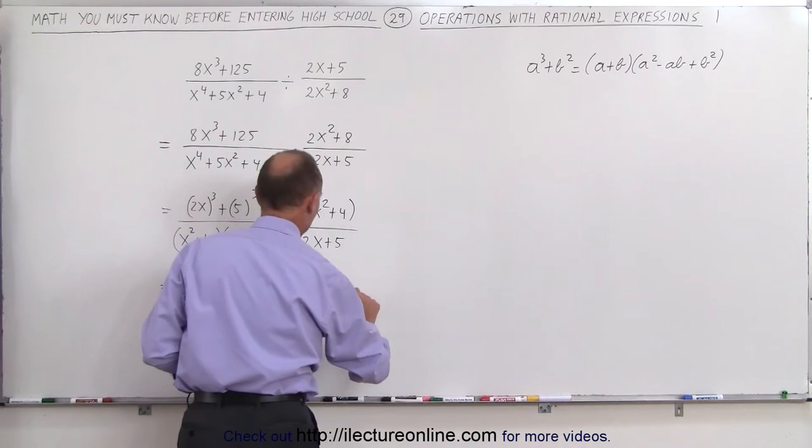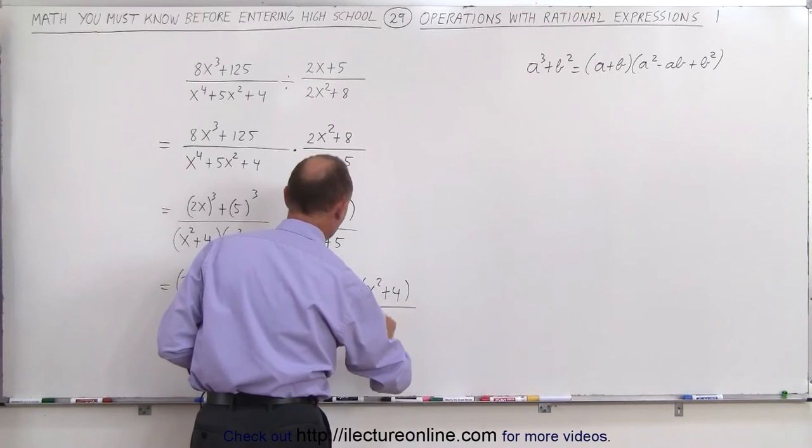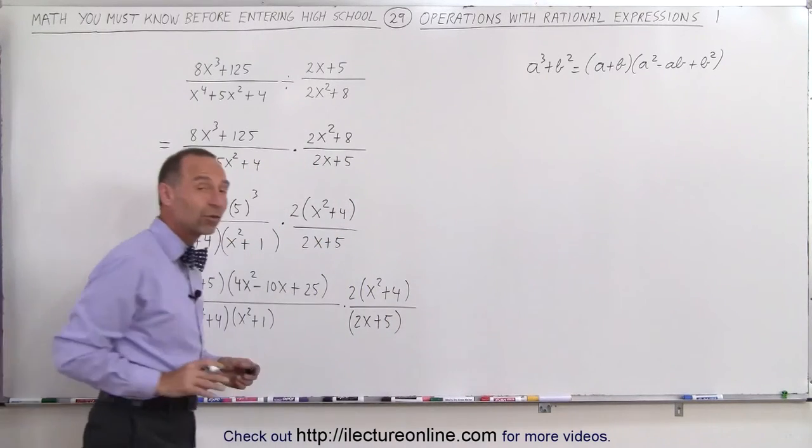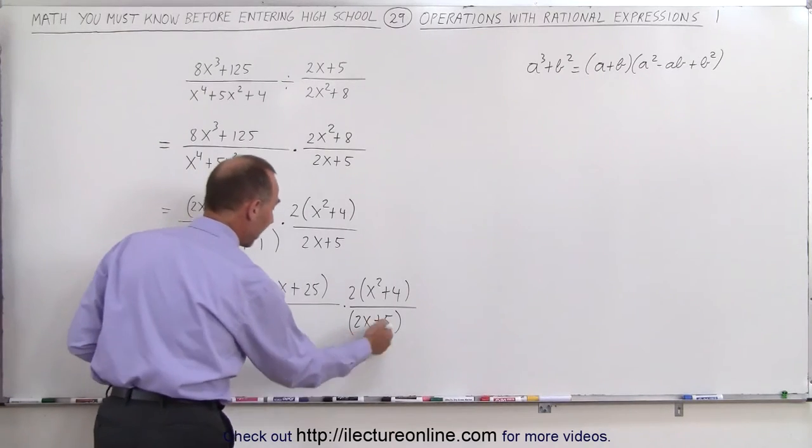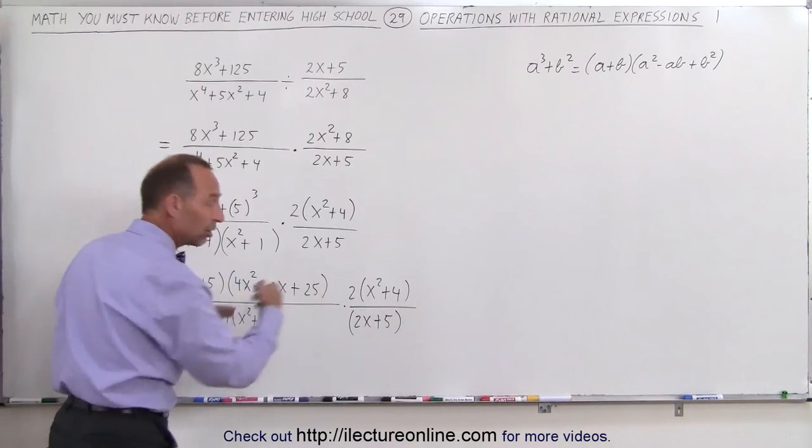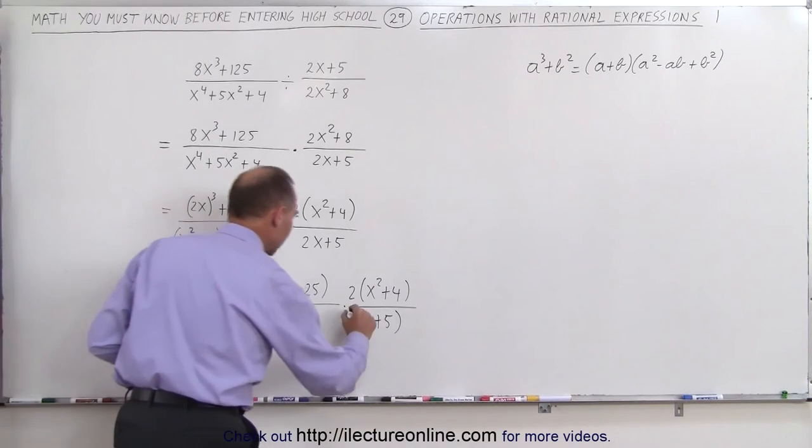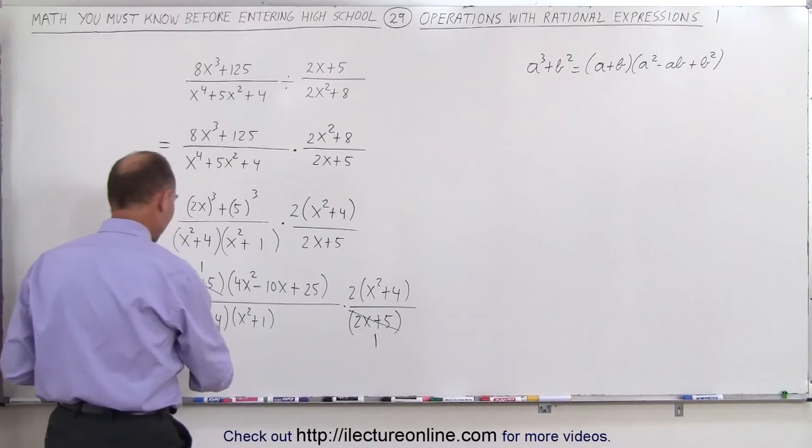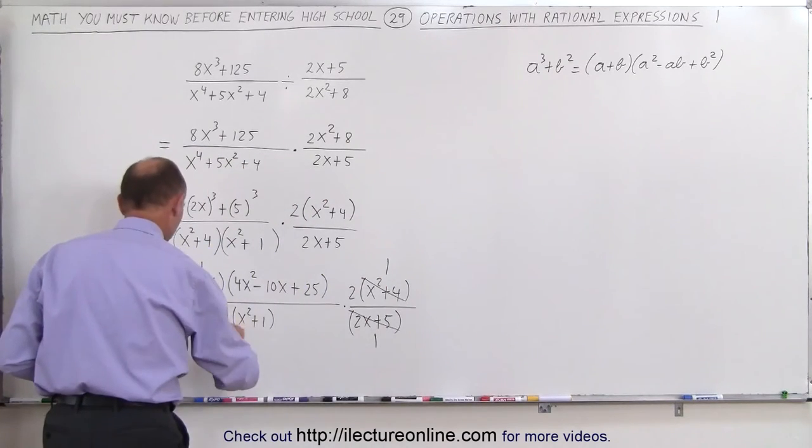and then times 2 times x squared plus 4 divided by 2x plus 5. And now we can see that there's some things we can cancel out. We have a 2x plus 5 here. We have a 2x plus 5. Everything is multiplied. There's no addition or subtraction anywhere. So we can see that this can be canceled out with this. And we have an x squared plus 4 and an x squared plus 4. This can be canceled out with this.